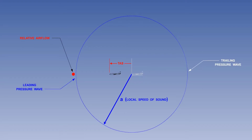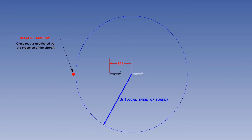True air speed is the speed of the aircraft through the air — specifically the air just in front of the leading pressure wave. The trailing pressure wave is included for reference purposes only. During the study of high speed flight, the most important aspect of the relative air flow is that it is close to, but as yet unaffected by, the presence of the aircraft.